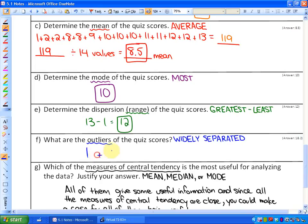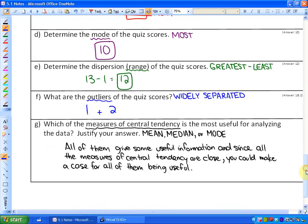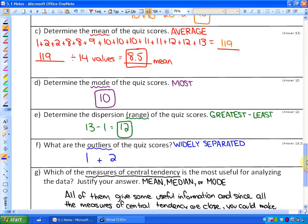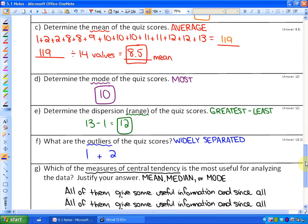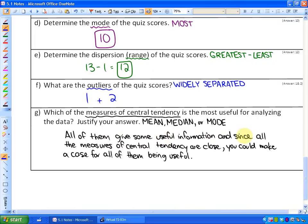And finally, the last part of your study guide says which of the measures of central tendency is the most useful for analyzing the data? Justify your answer. So what we're looking for is the answer mean, median, and mode—which of these represents the data the best? Well, if we look at the mean, median, and mode, in this case they're actually all pretty close. The mean is eight point five, the median is ten, and the mode is ten. So if we would like to represent, they're all pretty close. It says all of them give some useful information, and since all the measures of central tendency are close, you could make a case for all of them being useful. So I don't really have an answer there. In this case, they all appear to be somewhat useful.